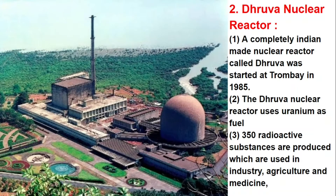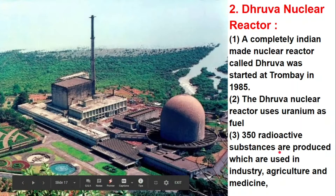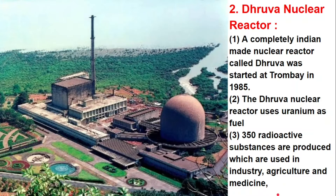A completely Indian-made nuclear reactor called Dhruva was started at Trombay in 1985. The Dhruva nuclear reactor uses uranium as fuel. Around 350 radioactive substances are produced, which are used in industry, agriculture, and medicine. Dhruva reactor is India's largest nuclear research reactor. It was the first nuclear reactor in Asia, located in the Mumbai suburb of Trombay at the Bhabha Atomic Research Center.